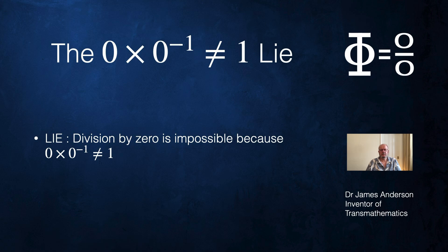Welcome to Transmathematica, I'm James Anderson. Today we're going to look at proofs that try to persuade you that division by zero is impossible because zero times zero to the power minus one is not equal to one.